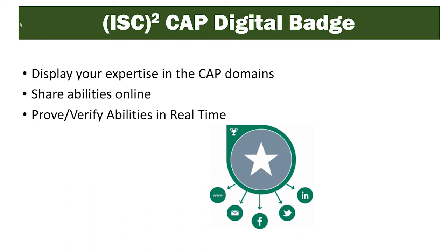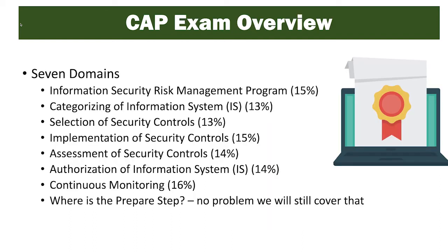The digital badge can be placed on your social media pages, your resume, and personal websites. It displays your expertise in the CAP domains and gives you the ability to share and verify abilities in real time. The CAP exam covers seven domains: Information Security Risk Management Program at about 15%, Categorization of the Information System at about 13%, Selection of Security Controls at about 13%, Implementation of Security Controls at about 15%, Assessment of Security Controls at about 14%, Authorization of the Information System at about 14%, and Continuous Monitoring at about 16%. Notably, the prepare step is not outlined in the CAP certification exam overview, but we will cover it at both the organization and system level in this course.